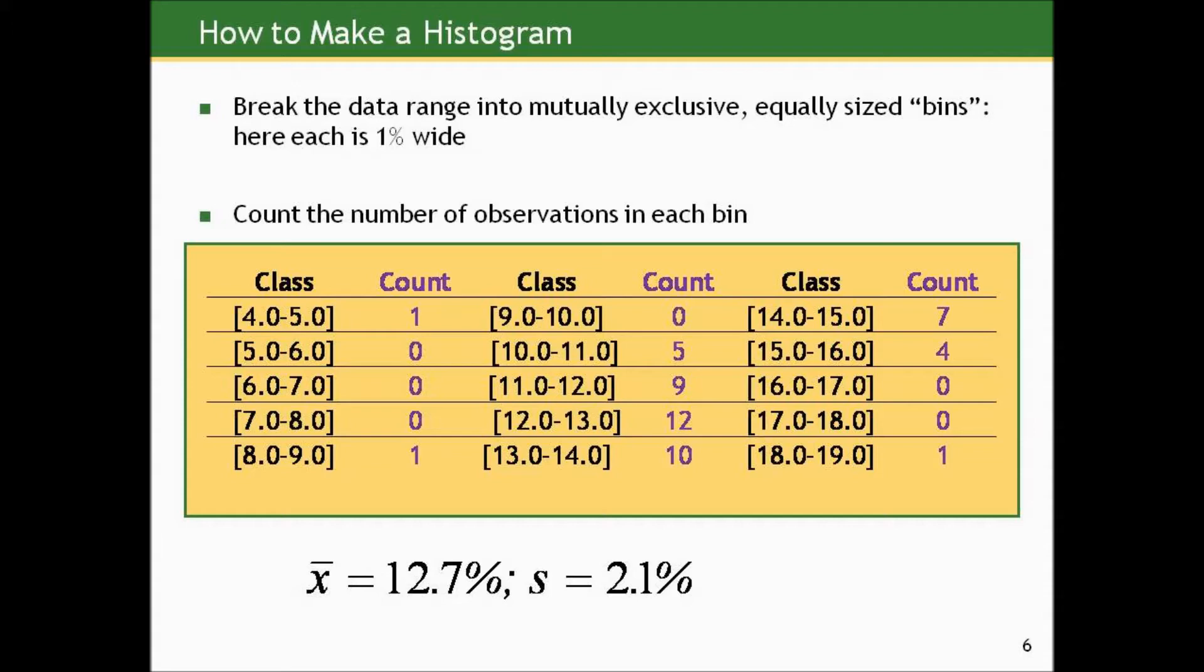And then we count the number of observations in each bin. So this notation I'm using, look at the first bin, 4% to 5%. There's a bracket on the left side and a parenthesis on the right. What that means is that we include the number 4 in our interval, but go up to just before 5, i.e., go up to 4.9999. And then the next interval starts at 5, exactly includes 5, and goes up to just before 6. So that these are mutually exclusive and there's no double counting those at the end points. So there's only one observation between 4% and 5%, no observations between 5% and 6%, and we don't even get any action until we hit the interval between 8% and 9%.